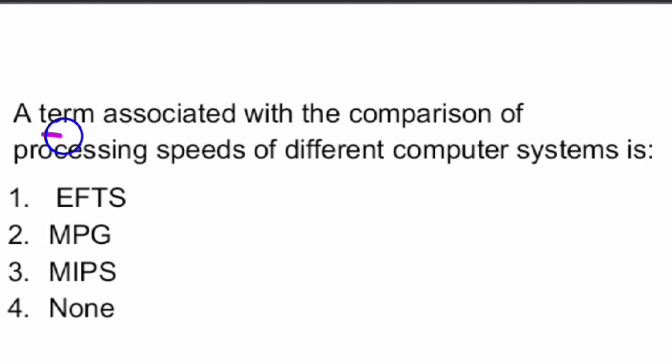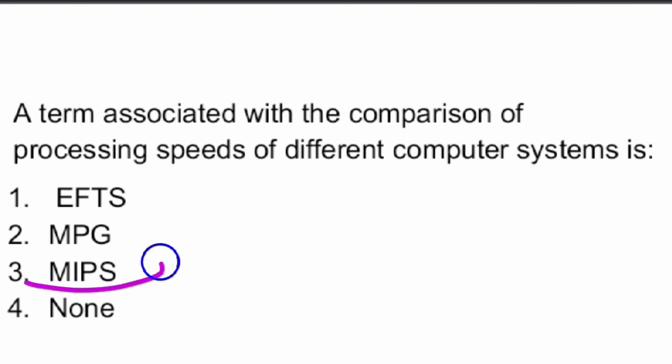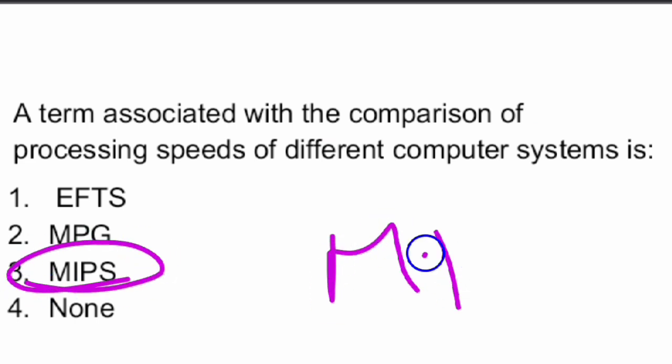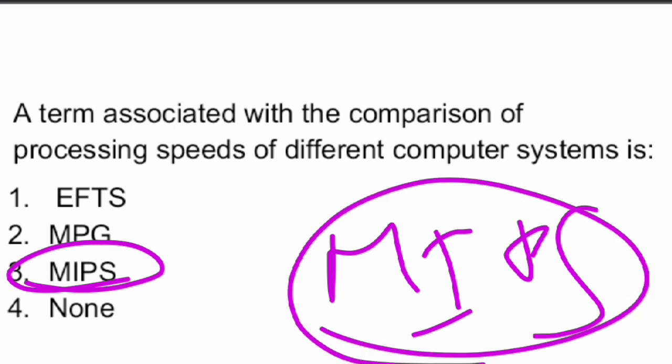Next question: a term associated with the comparison of processing speeds of different computer systems is MIPS. MIPS indicates the speed of the computer. There is a full form for this — try to find out what MIPS stands for.